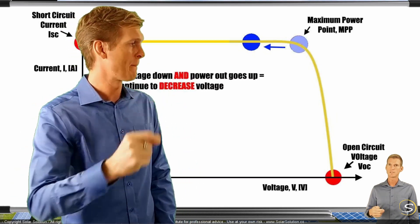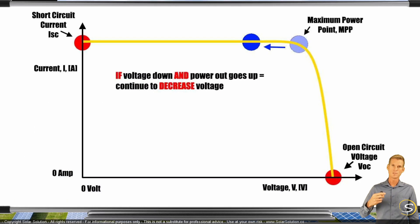You go ahead again. And it will continue to do this. So what it's doing is it says, well, if the voltage goes down and the power output goes up, it will continue to decrease the voltage. But now you can see that at a certain point, it goes beyond the maximum power point. And as a result, it will notice,